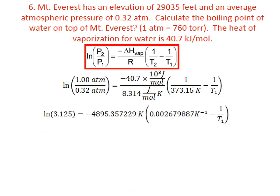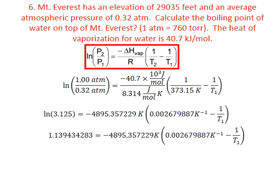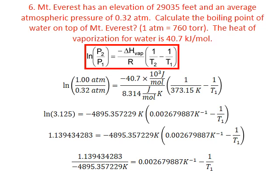Now we simplify where we can. On the left, 1 divided by 0.32 gives us 3.125. On the right, negative 40.7 times 10 to the third divided by 8.314 gives us negative 4895.357229 kelvin. 1 divided by 373.15 kelvin is 0.002679887 kelvin to the negative 1. We take the natural log of 3.125 on the left and it gives us 1.139434283. Dividing each side by negative 4895.357229 kelvin gives us negative 0.000232758 kelvin to the negative 1 on the left.